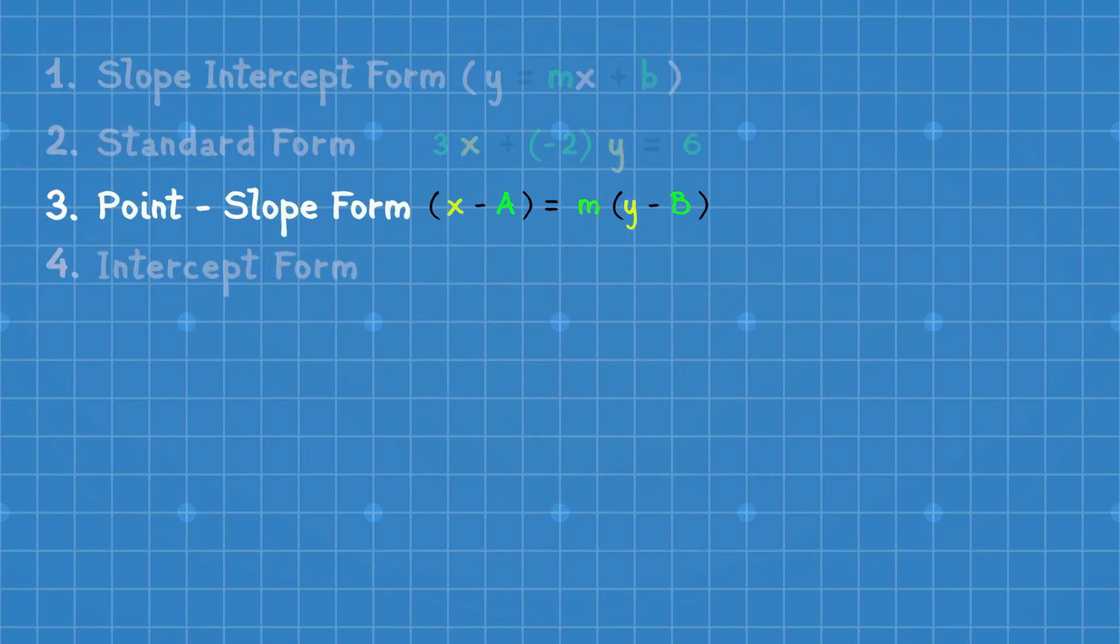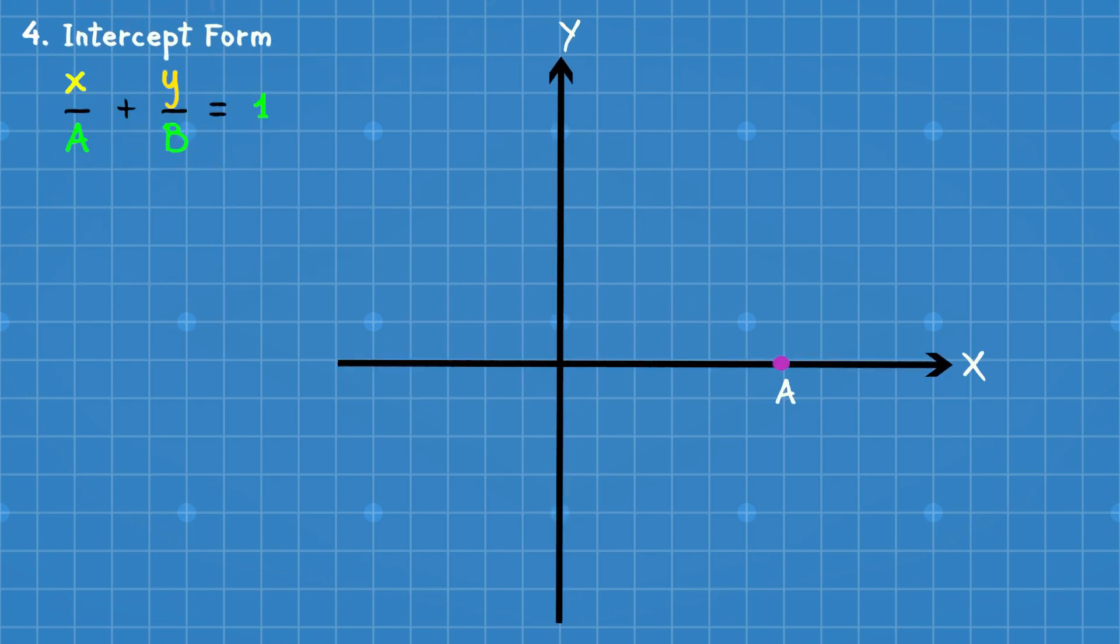Heading towards the last section of this video, we now look at the fourth form of linear equation. The intercept form is represented as x/a + y/b = 1. The coefficient a is the intercept on the x-axis and b is the intercept on the y-axis. Joining these 2 points gives a line segment.